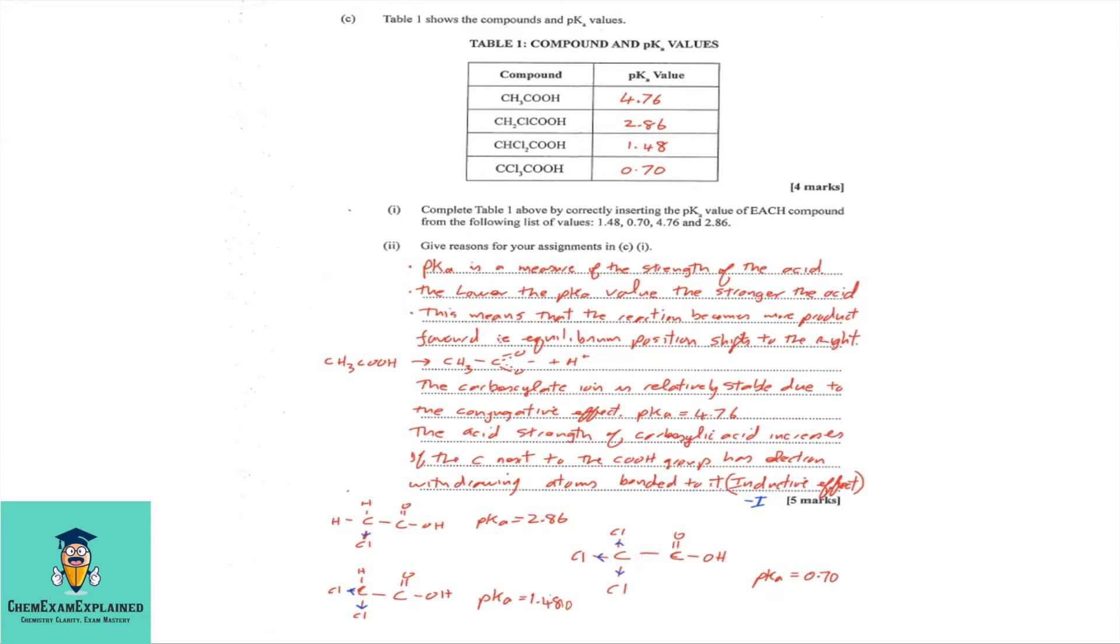Now, carboxylate ion is relatively stable due to the conjugative effect. And this is why this carboxylic acid, ethanoic acid, has the lowest acidity, hence the highest pKa. The acid strength of carboxylic acid increases if the carbon next to the carboxylic acid group has electron-withdrawing atoms bonded to it. And this is due to the inductive effect. So, if you look at the diagram here, you'll see that this carbon has attached to it one chlorine, which is a withdrawing group. So, if you have another withdrawing group attached, then you'll realize that it is becoming more acidic. Hence the pKa value is decreasing. This one, with three withdrawing groups, has the highest acidity, hence the lowest pKa value.